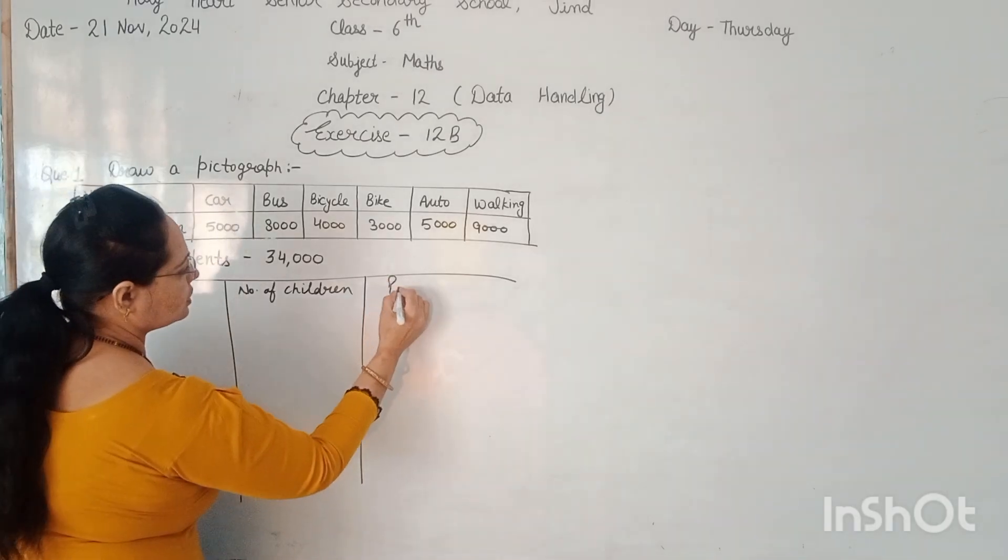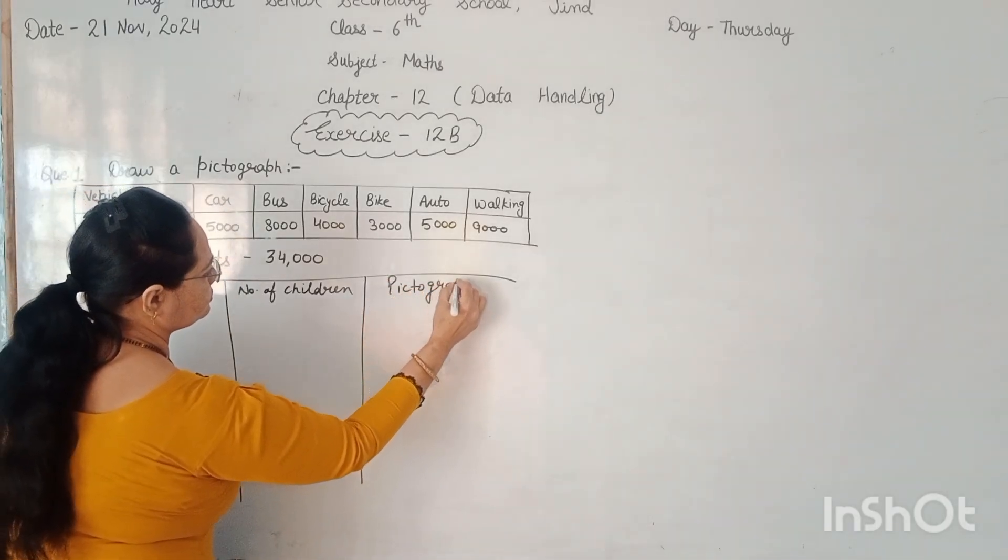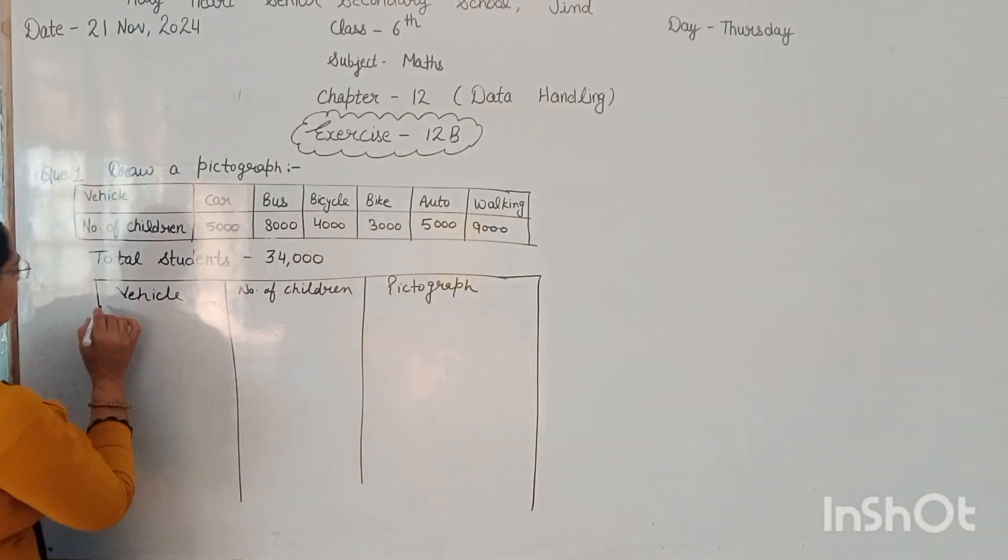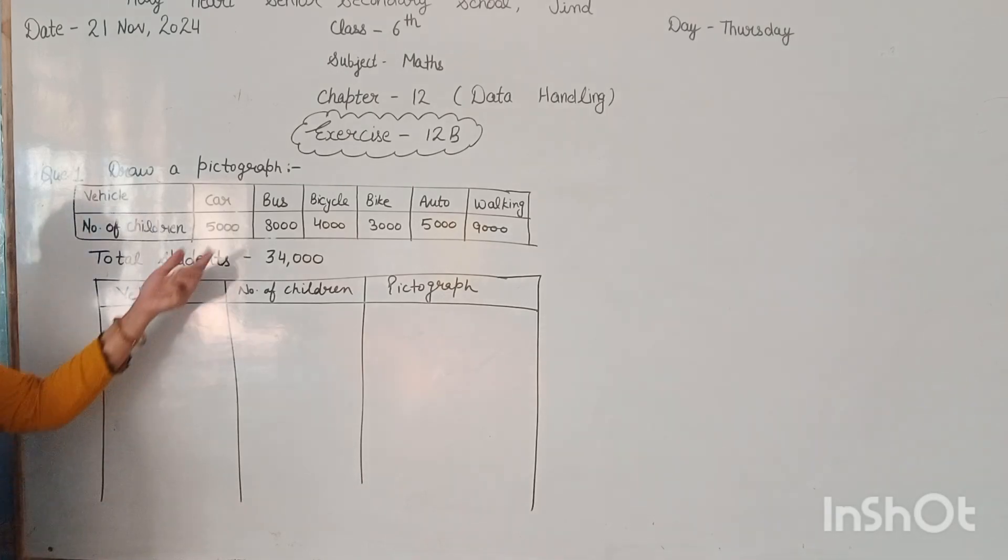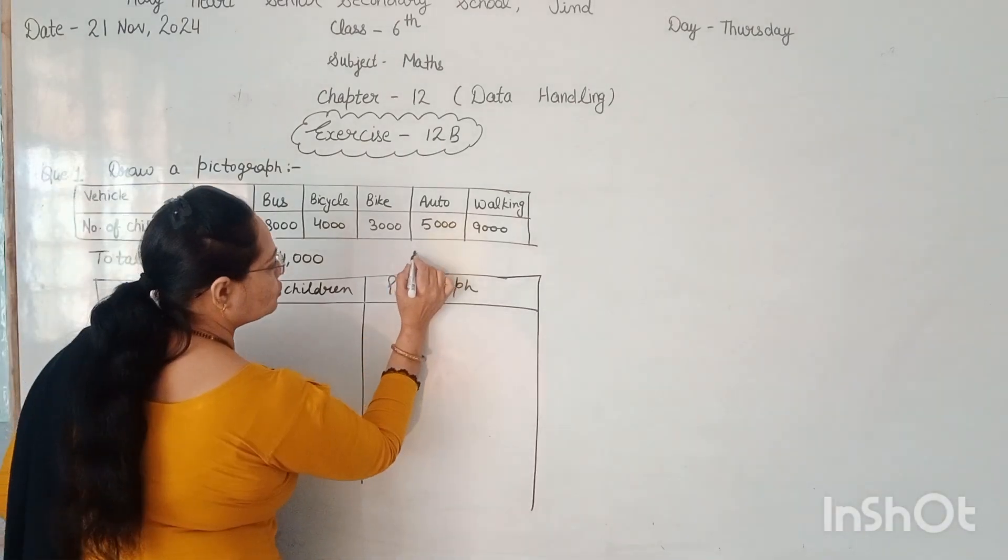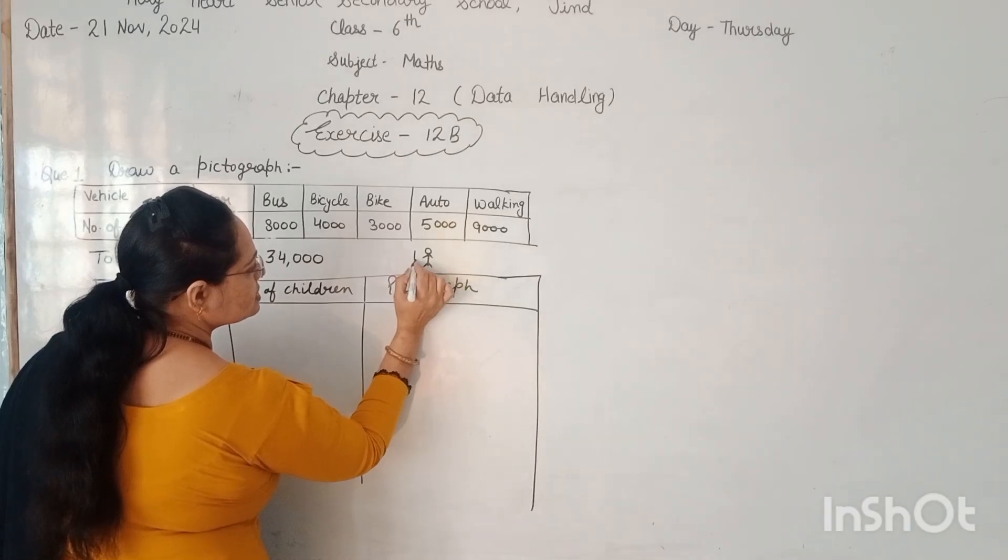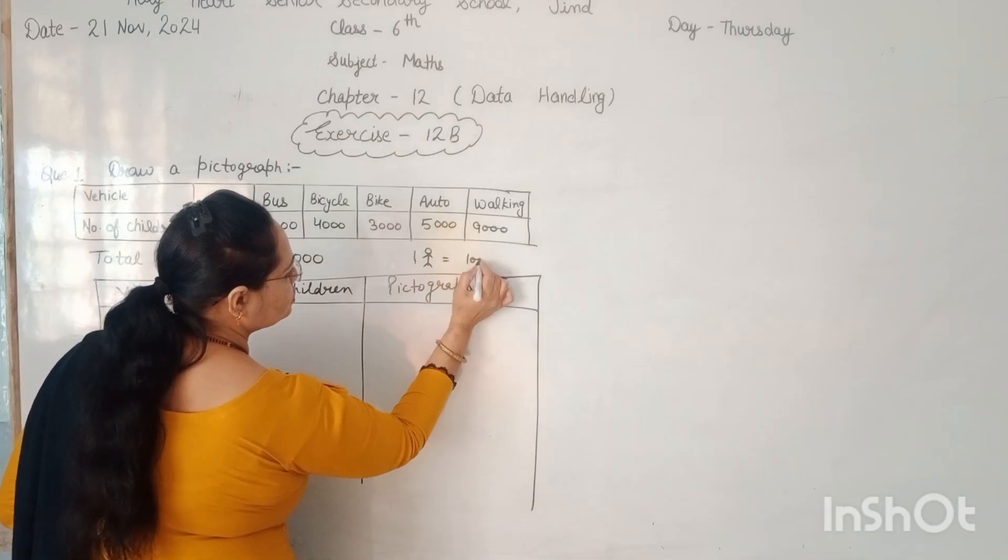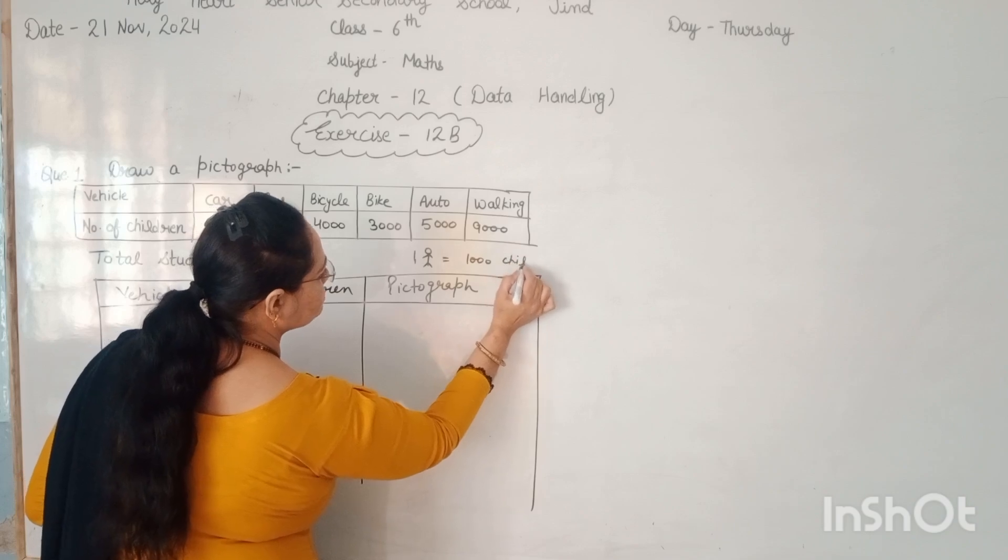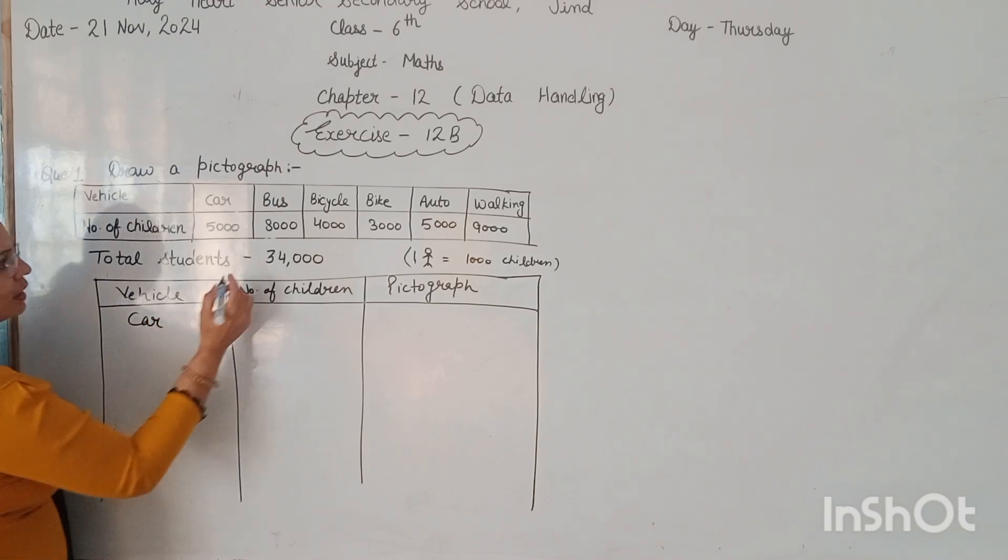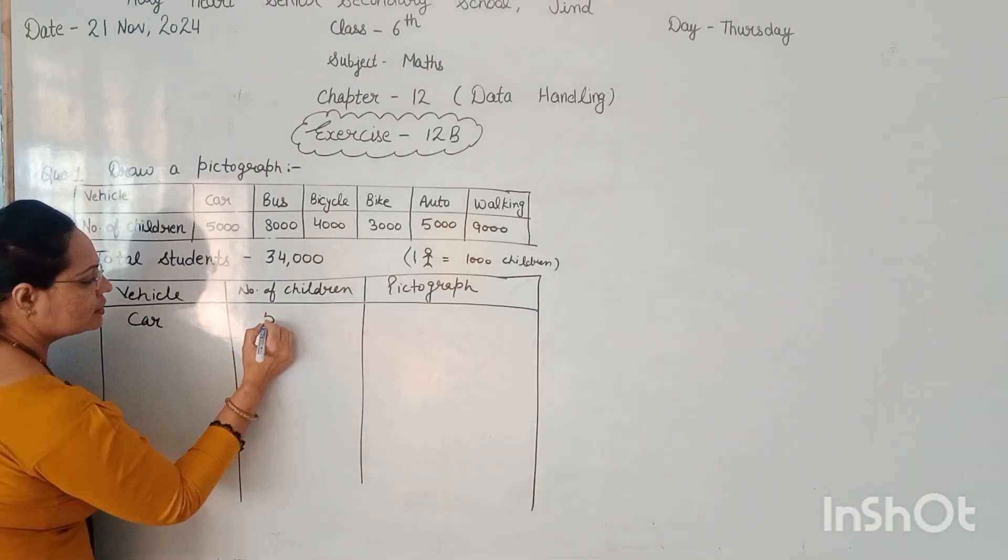And here draw the pictograph. In this pictograph, on behalf of this data, we select that one picture is equal to, so one symbol represents number of children. One symbol is equal to 1,000 children. So for the car, how many number of children here? 5,000.